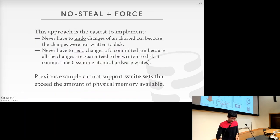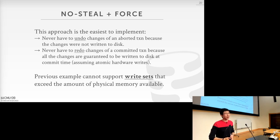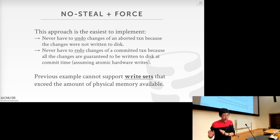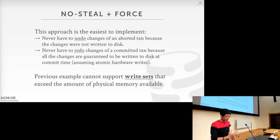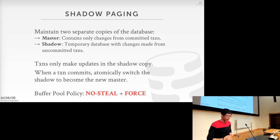To summarize: with no-steal and force, you don't need undo log records because you don't write changes of uncommitted transactions onto disk. And you don't need redo log records either, because all changes of committed transactions are written onto disk before commit. But there are lots of performance implications and functionality limitations — especially if a transaction has written lots of pages exceeding the buffer pool size, you simply cannot deal with that. A variant of this approach is called shadow paging, which makes this a little better, but we'll see it also has its own limitations.